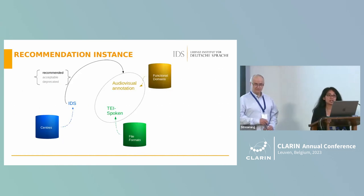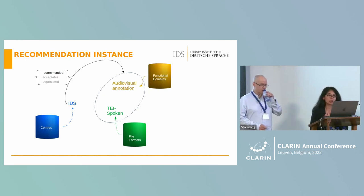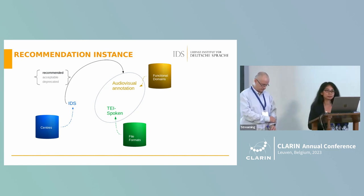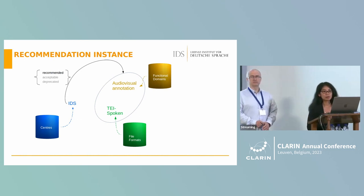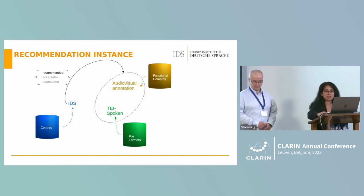We define recommendations with four main parts. From the top left, in curly brackets, there are the levels of recommendations — a recommendation can be recommended, acceptable, or discouraged. The blue cylinders represent centers, the green one file formats, and the yellow one functional domains. For example, a center like IDS would recommend file format TI Spoken for the functional domain audiovisual annotations, but it can also discourage plain text for certain functional domains.